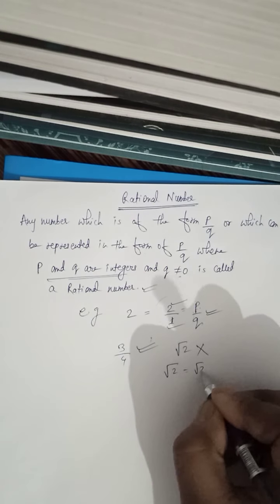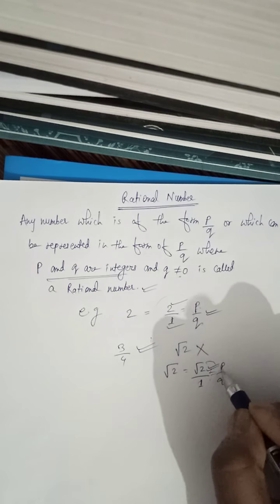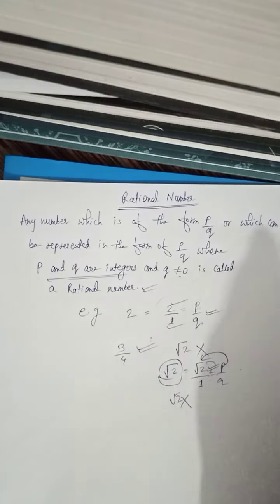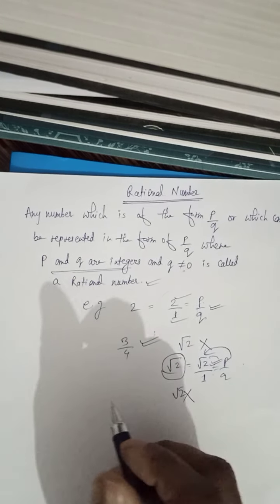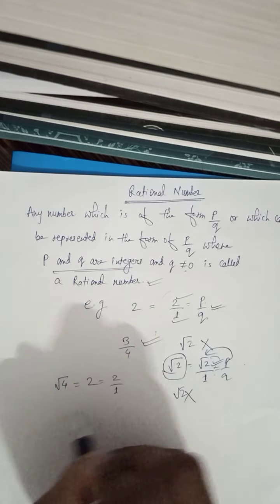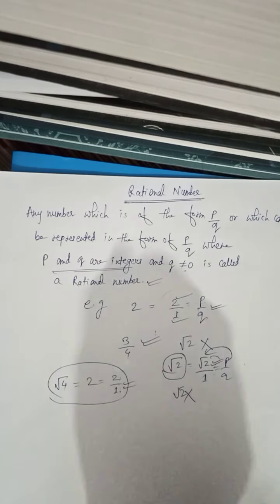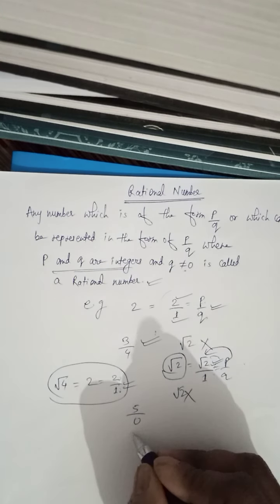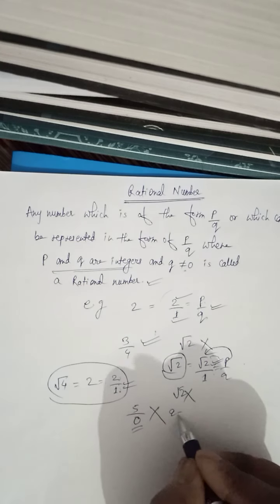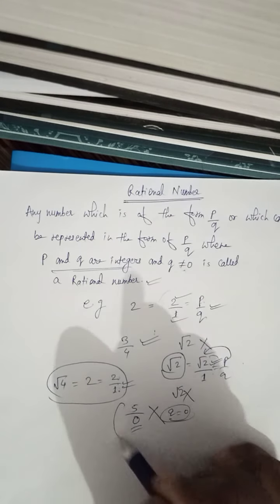Why is √2 not a rational number? Because √2 cannot be expressed in the form p/q where p and q are integers and q is not equal to 0. Therefore, √2 is not a rational number.